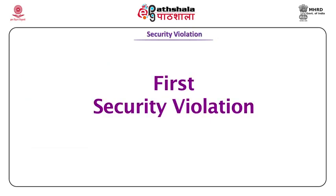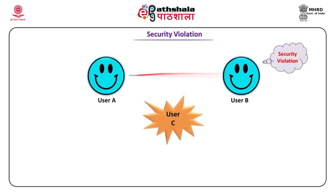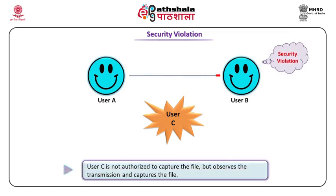First is security violation. When a security violation occurs, user A is transmitting a file to user B which contains bank account information. Between A and B, C is present. C is not authorized but captures the file and observes what is being transmitted. So C would be able to read the bank account number. This is the first security violation.